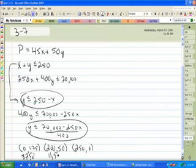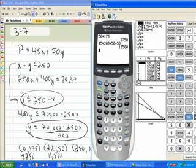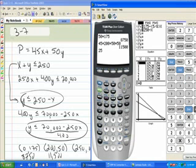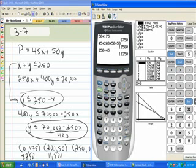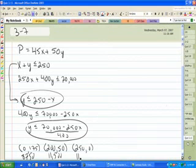Or 11,500. And this one would be 250 times 45 plus 0. 250 times 45 is 11,250. So to maximize the profit, he needs to make 200 of the first product and 50 of the second product.